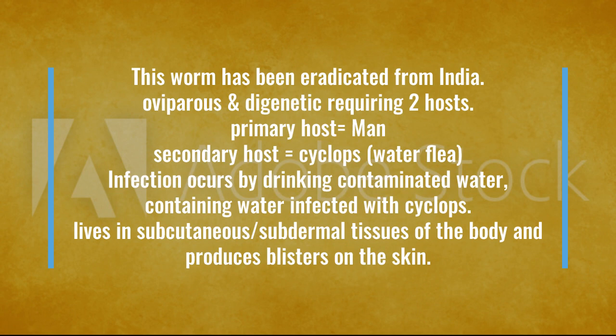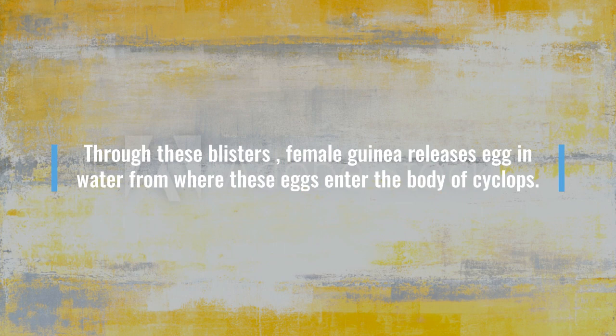The worm lives under the skin and causes blisters. When the person goes swimming, the blisters release larvae into the water, where the larvae are taken up by Cyclops. The human then drinks the contaminated water containing infected Cyclops, and this cycle continues.